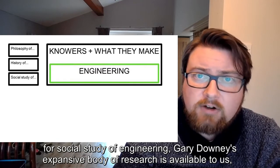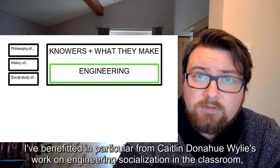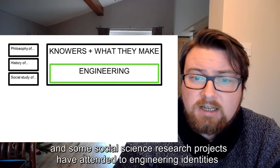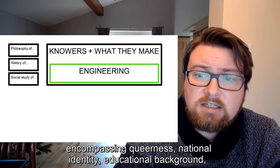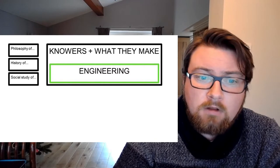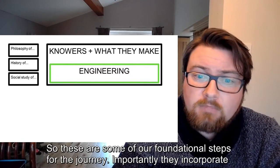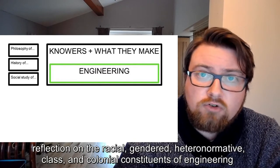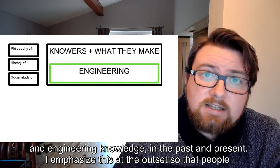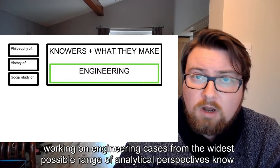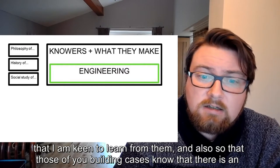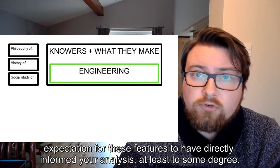For social study of engineering, Gary Downey's expansive body of research is available to us. I've benefited in particular from Caitlin Wiley's work on engineering socialisation in the classroom, and some social science research projects have attended to engineering identities encompassing queerness, national identity, educational background, and so on. Much of this research can be found in the journal Engineering Studies. These are some of our foundational steps for the journey. Importantly, they incorporate reflection on the racial, gendered, heteronormative, class, and colonial constituents of engineering and engineering knowledge in the past and present. I emphasise this at the outset so that people working on engineering cases from the widest possible range of analytical perspectives know that I am keen to learn from them, and also so that those building cases know there is an expectation for these features to have directly informed your analysis, at least to some degree.